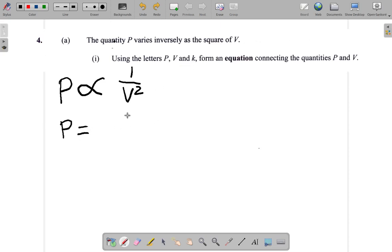K is a constant. It's K multiplied by 1 over V squared. That's what you have.